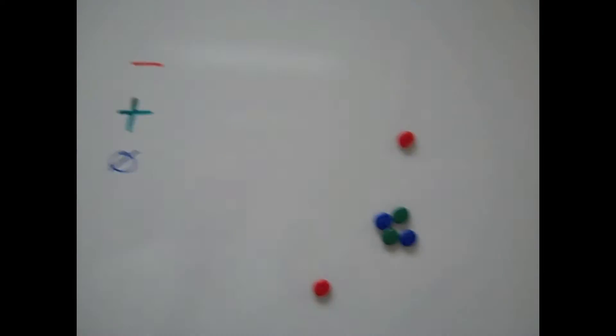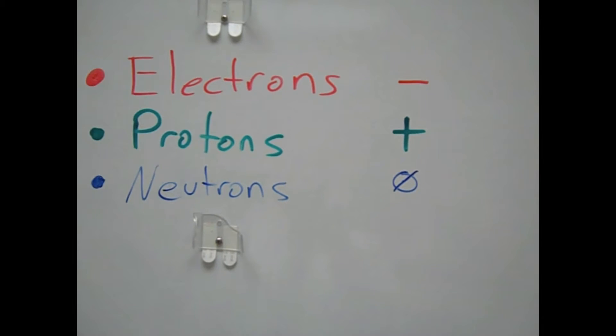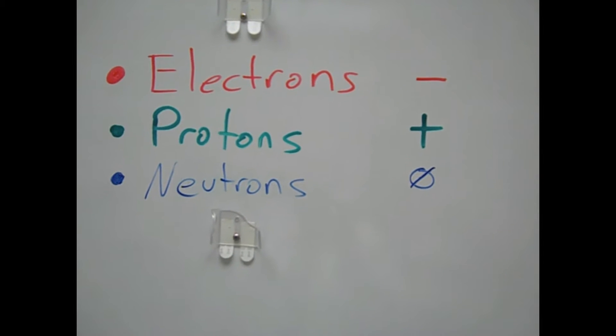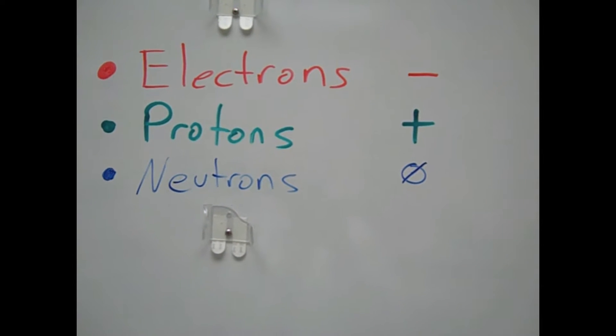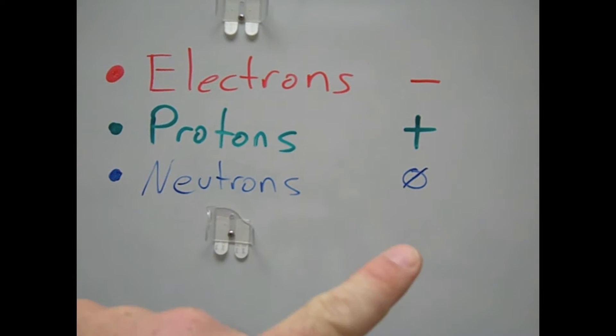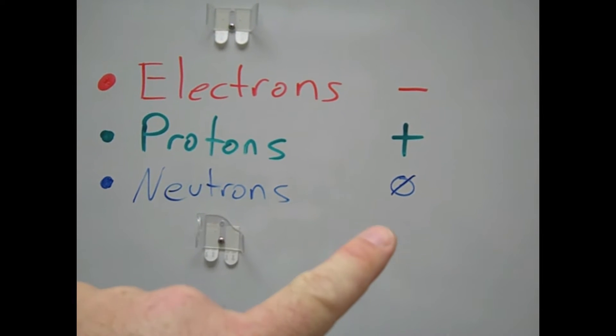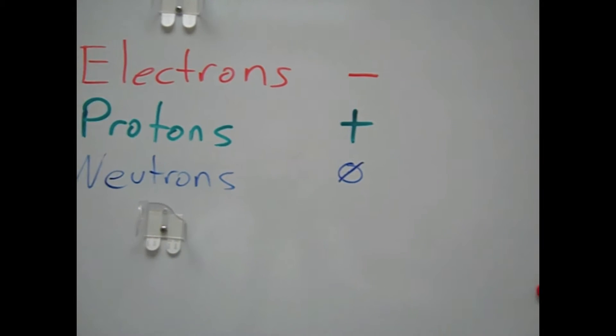So what exactly is static electricity? To understand it, we need to know a little bit about atoms. If you look at my board, atoms are made up of three parts: protons, neutrons, and electrons. An electron carries with it a negative charge, a proton has a positive charge, and a neutron has a neutral charge.